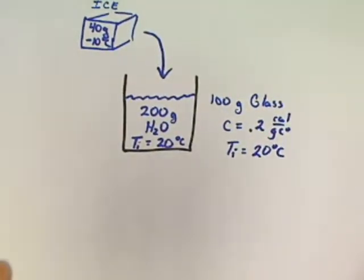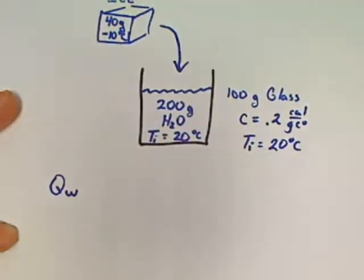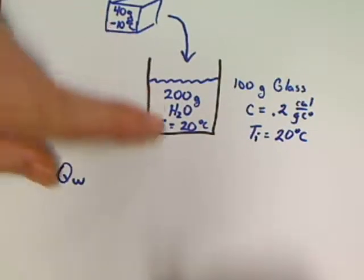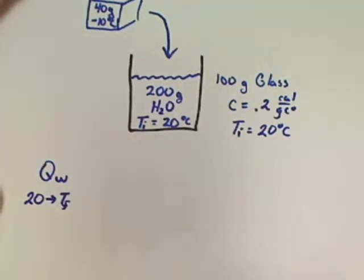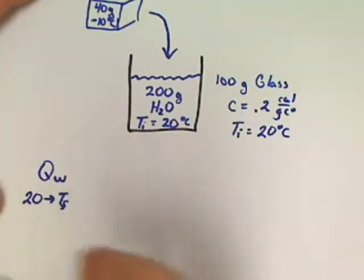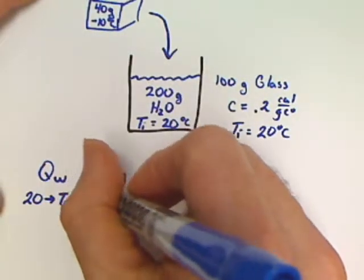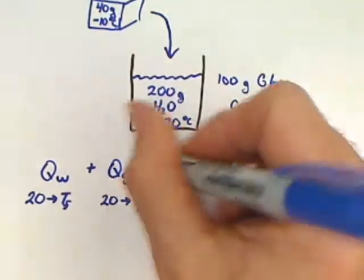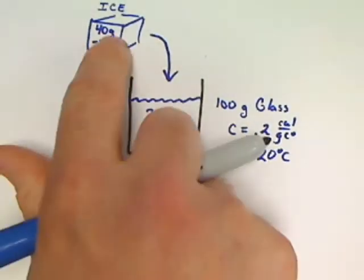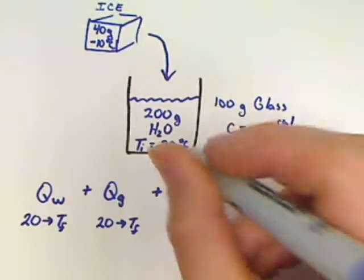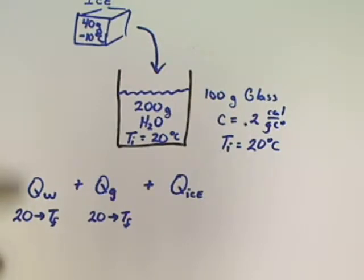Let's start doing this problem. We're going to have a Q for the water, which is going to chill off because we're putting an ice cube in. The water goes from 20 to some temperature final — less than 20. We also have a Q for the glass going from 20 down to some temperature final as well. Now we can talk about the ice.